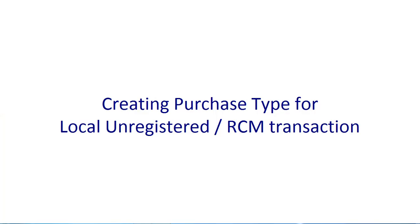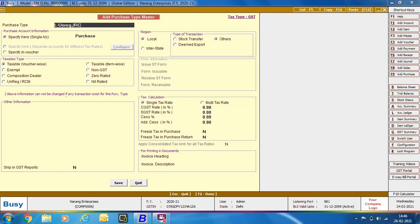Next is creating Purchase Type for Local Unregistered RCM Transaction. If you have made any purchase from an Unregistered Dealer or it's an RCM Transaction — for example, you have taken services from a Lawyer — you will enter a Purchase Voucher of RCM type. We are specifying the Purchase Type as L Unregistered RCM. In the Taxation Type group, we are selecting Unregistered RCM. Region is Local. Then click Save to save the Purchase Type Master.